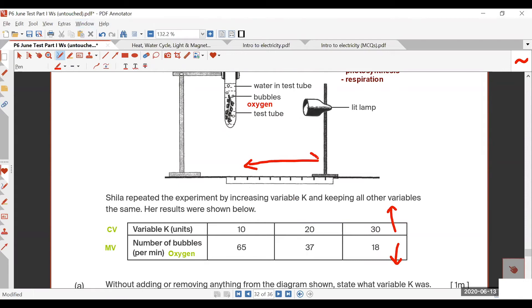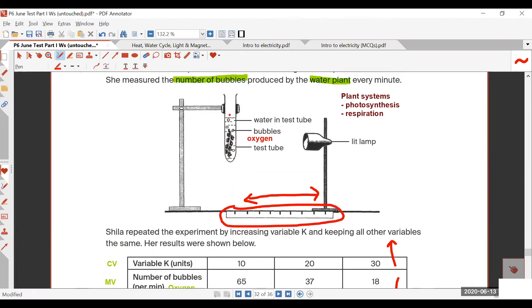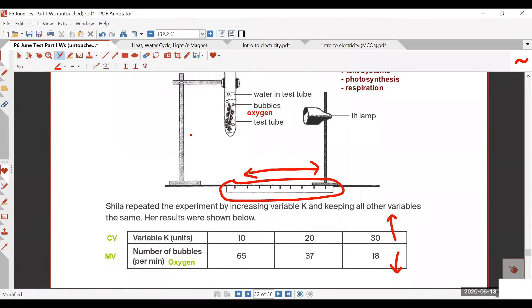That means I push the lamp far, far, far away. That's the reason why they put the ruler here. If I push the lamp far away, there will be lesser light that's received by the plant itself. Then my rate of photosynthesis will drop.